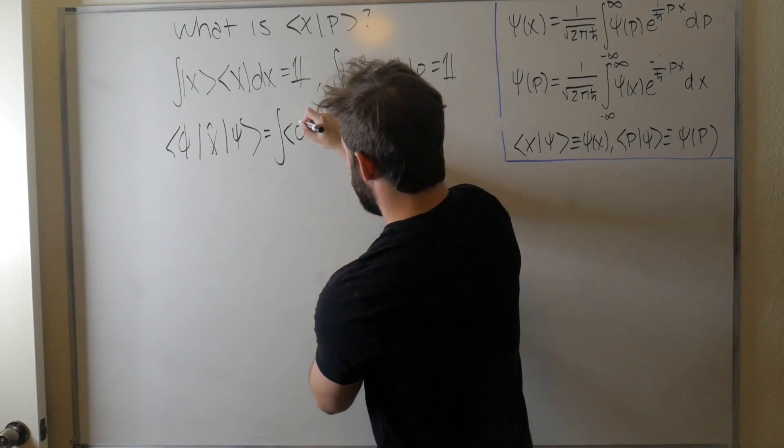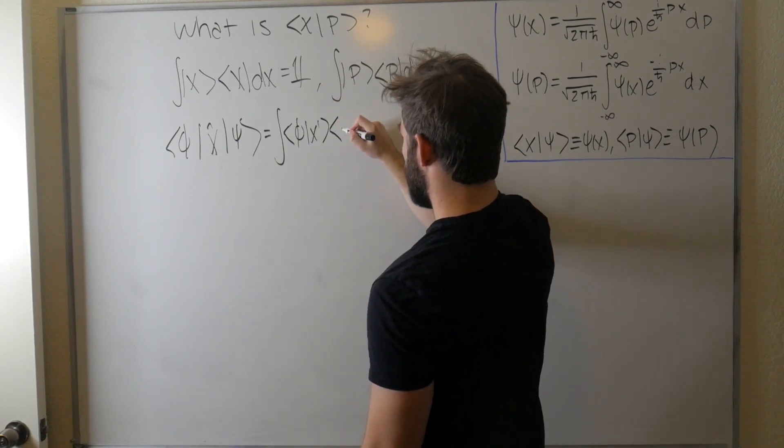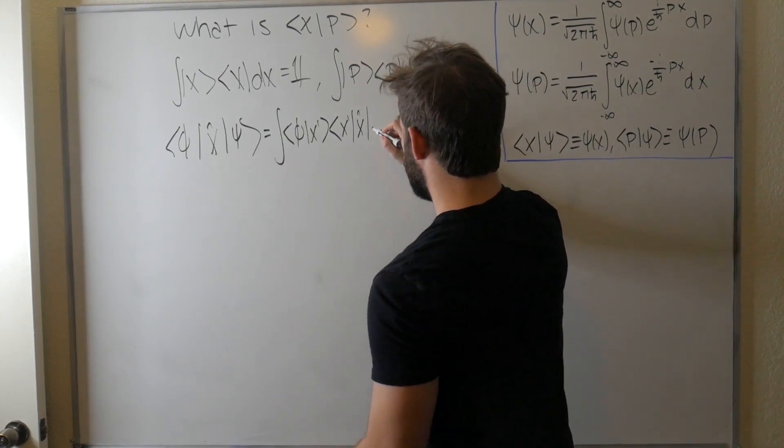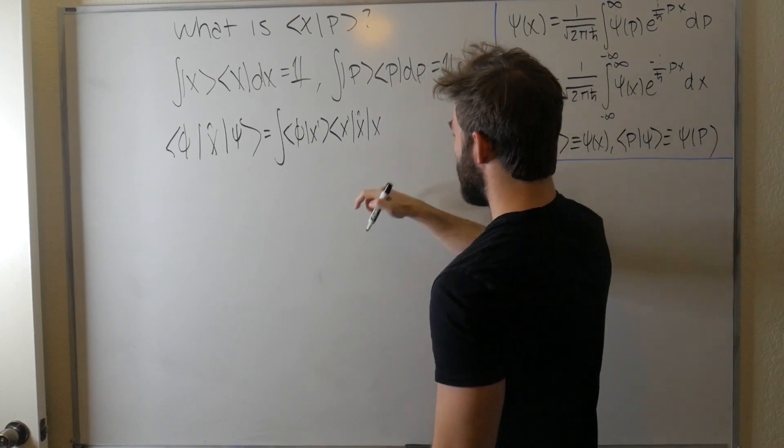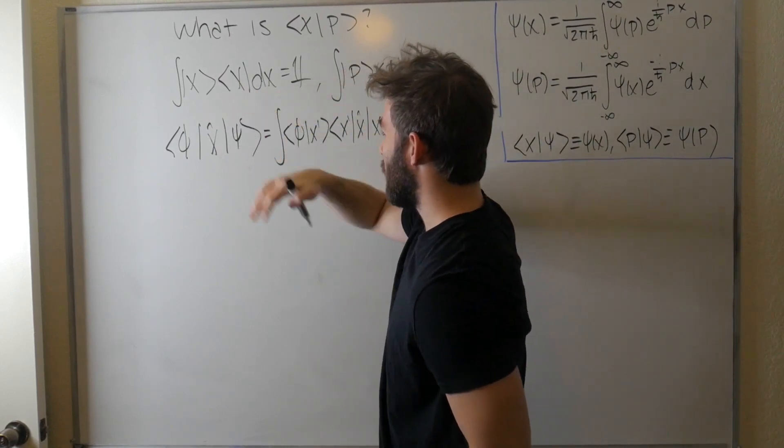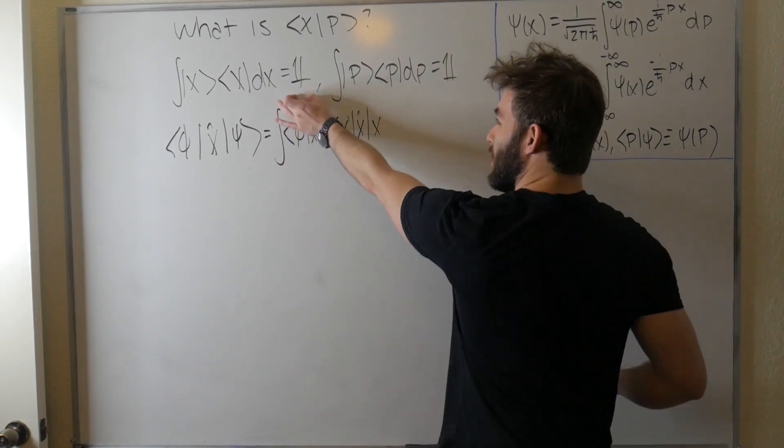So we can say that this is equal to the integral, which comes from this completeness relation. Here's our phi, and we're going to insert completeness here and we'll call it x prime. There's our completeness. And now we're having our operator x hat. Completeness again. Let's call it x. And I'm calling these different indices just because since we're integrating twice, we're going to have two integrals, so we're just going to keep them separate even though they're both just really inserting one.